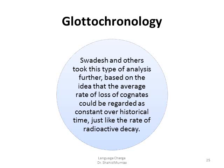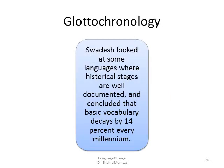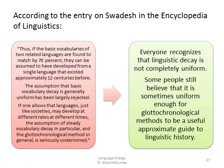Swadesh and others took this analysis further with glottochronology, based on the idea that the average rate of loss of cognates could be regarded as constant over historical time — analogous to the rate of radioactive decay. Swadesh looked at languages where historical stages are well documented and concluded that basic vocabulary decays by 14% every millennium.